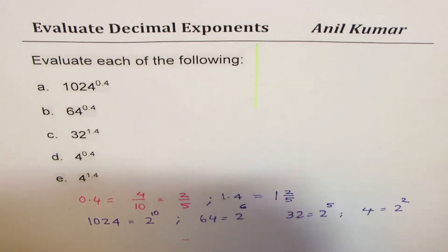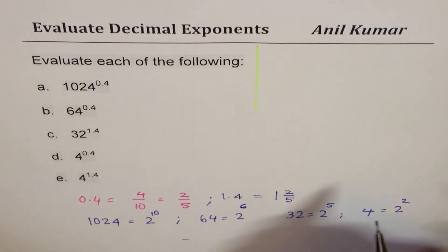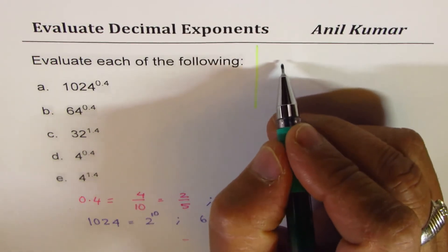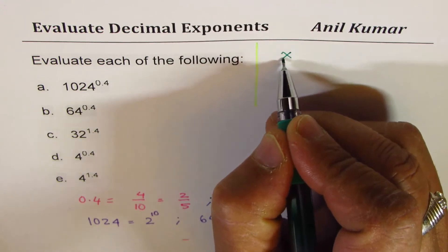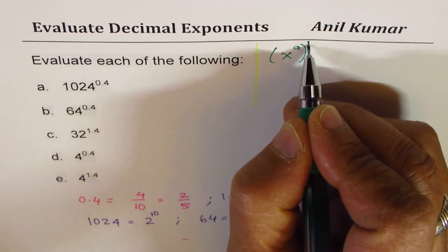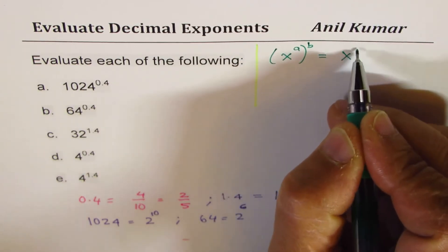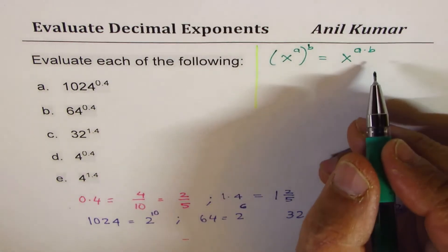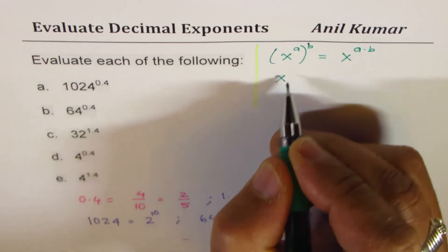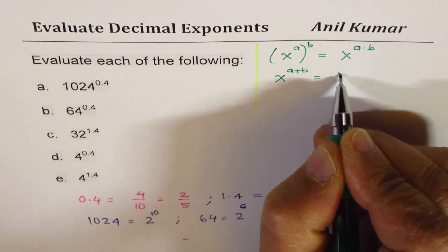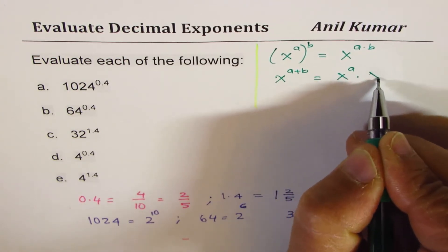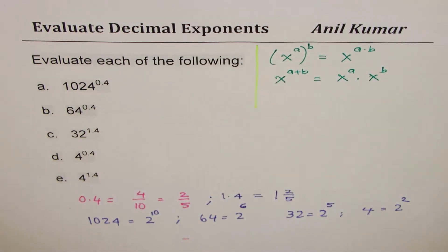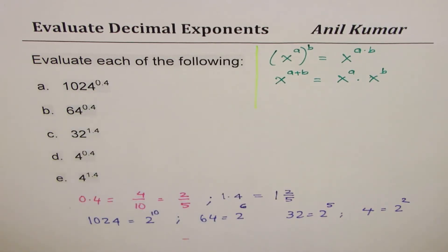Now this could be applied to simplify some of these exponents. Other things which you need to know to really answer these questions is the rules. If I have, let us say, x to the power of a to the power of b, I could write this as x to the power of a times b. x to the power of b, they get added. So these are exponent rules which you need to know to find or evaluate the values. So we will evaluate exact values of all these expressions.